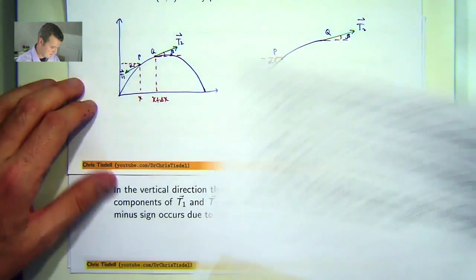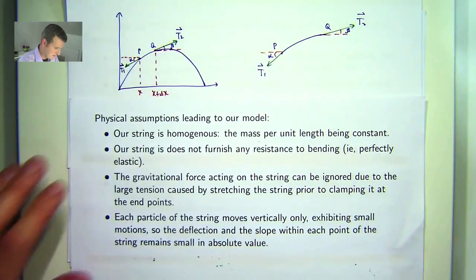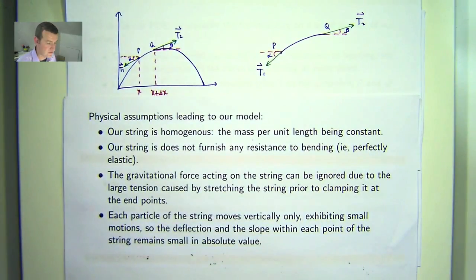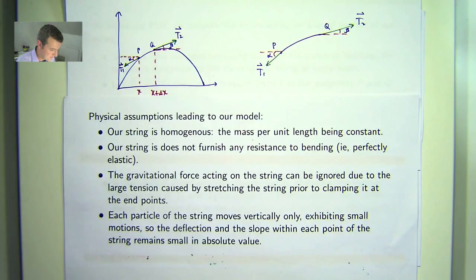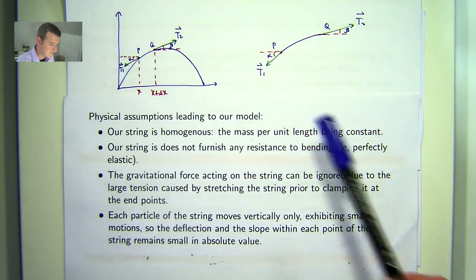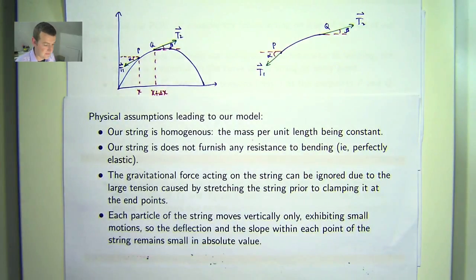Let's have a look at our physical assumptions first. Our string is made of the same material all the way through, the mass per unit length being constant. Our string does not resist bending. This is known as perfect elasticity. The gravitational force acting on the string can be ignored due to large tension caused by stretching the string prior to clamping it at the end points. And each particle of the string moves up and down, vertically only, not side to side, exhibiting small motions. So the deflection and the slope within each point of the string remains small.